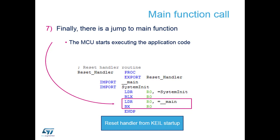In the debug environment, your software will usually stop at the first line of main.c - the first line of your void main - and then you can start running your code from that point.